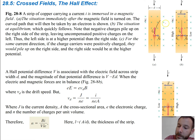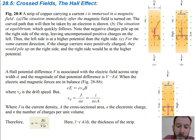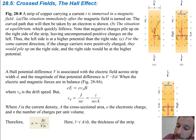So we have this strip of copper, and we put a magnetic field through it going down into the page — that's what those X's signify. The situation immediately after the magnetic field is turned on, the curved path that will be taken by the electron is shown. These electrons are going to want to move to the right, following this circular path because you have a force of the magnetic field going in this direction.